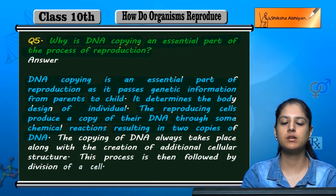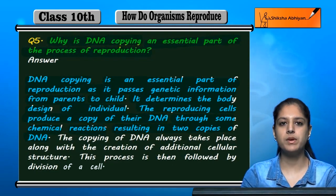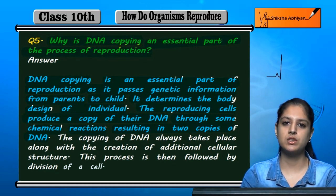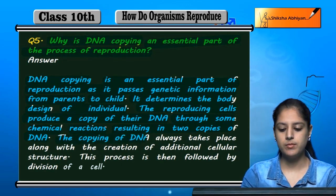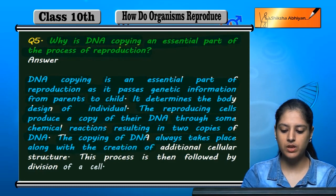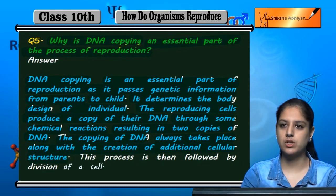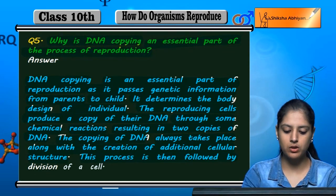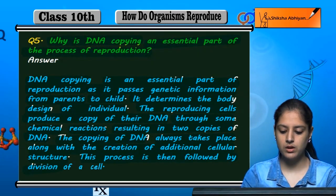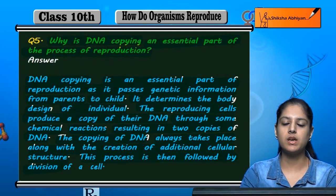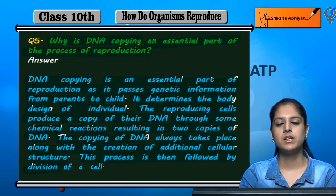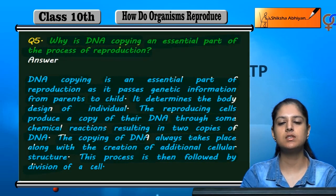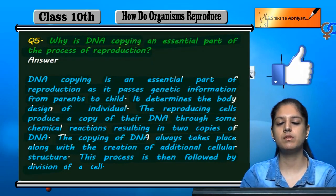The copying of DNA always takes place along with the creation of additional cellular structure. This process is then followed by division of a cell. The genetic material is copied through chemical processes, creating additional cellular structure for the new individuals.